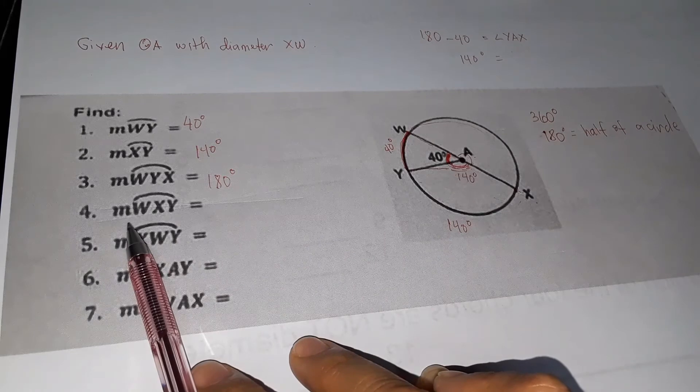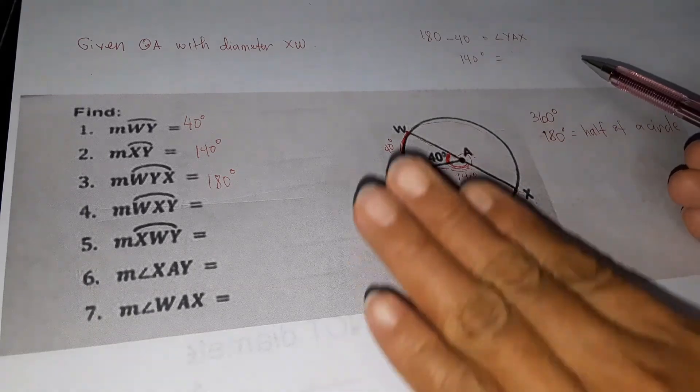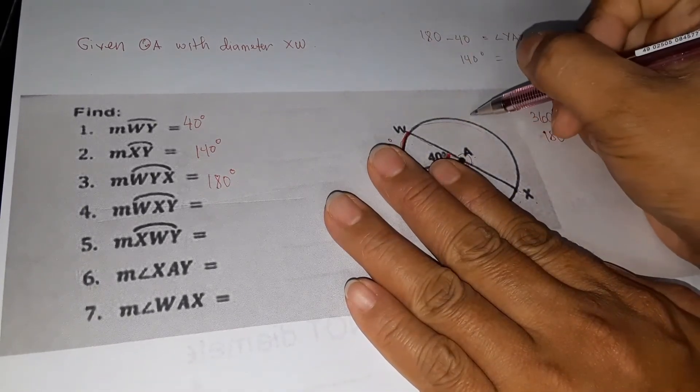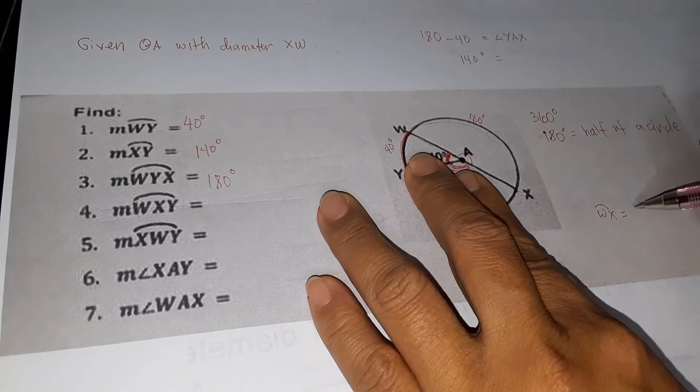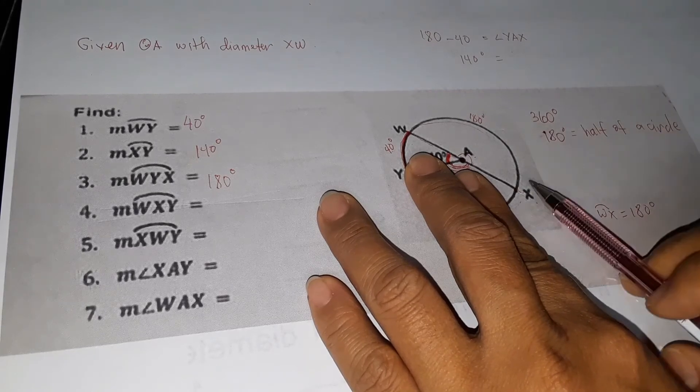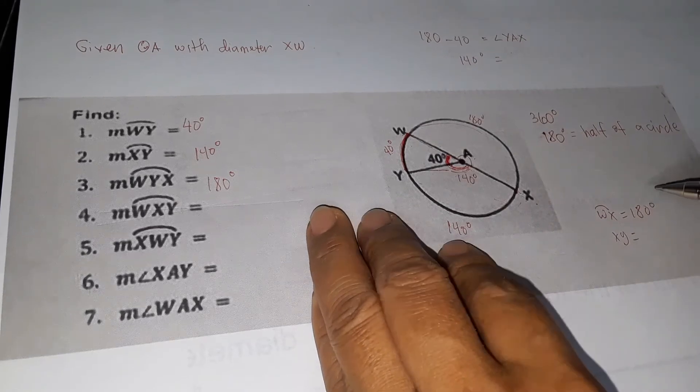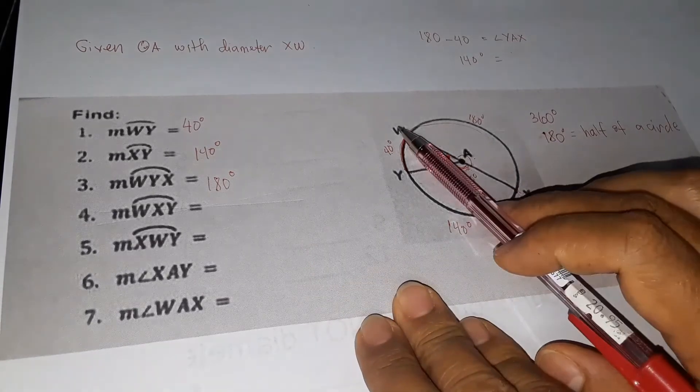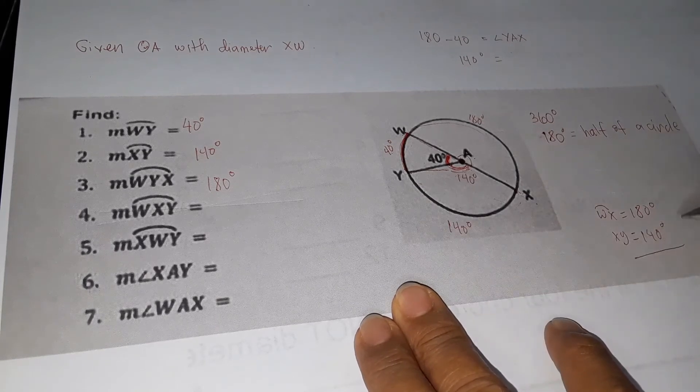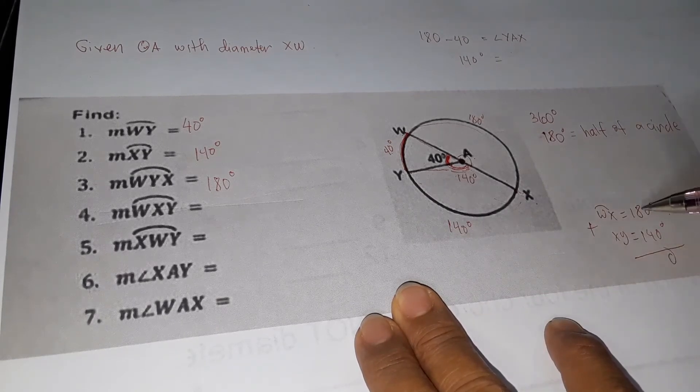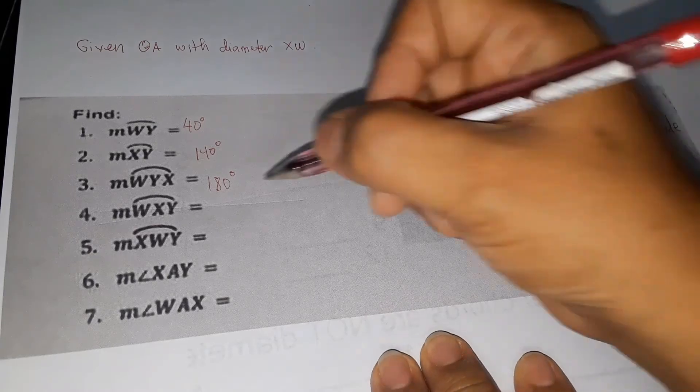Number four, the measurement of arc WXY. XY is equal to 140 degrees. So for arc WXY, we add them all. Zero plus eight plus four equals twelve, carry one, one two three. So we have 320 degrees.